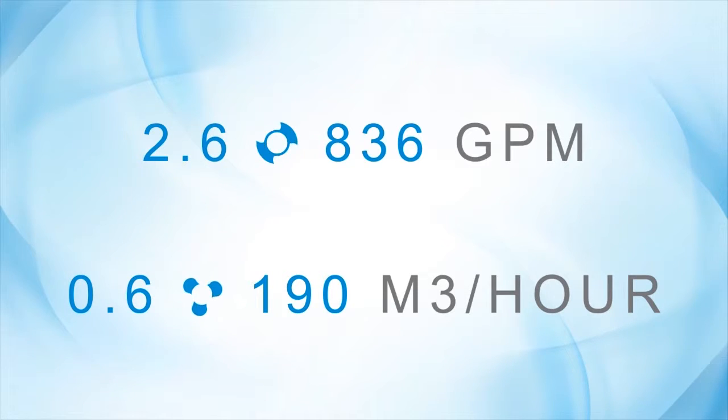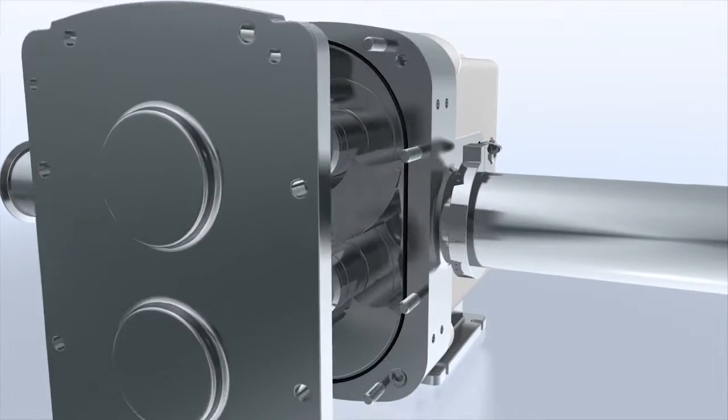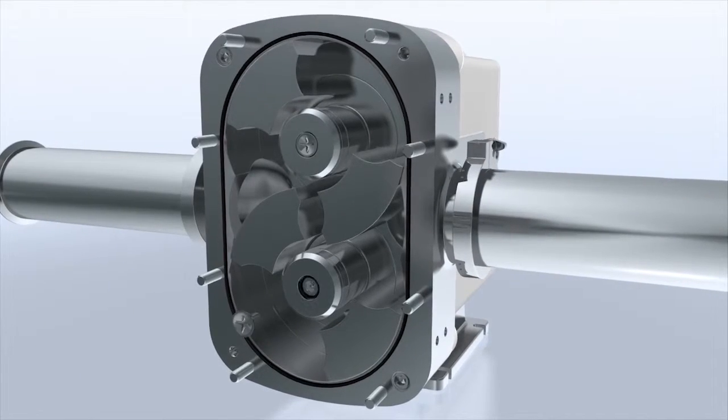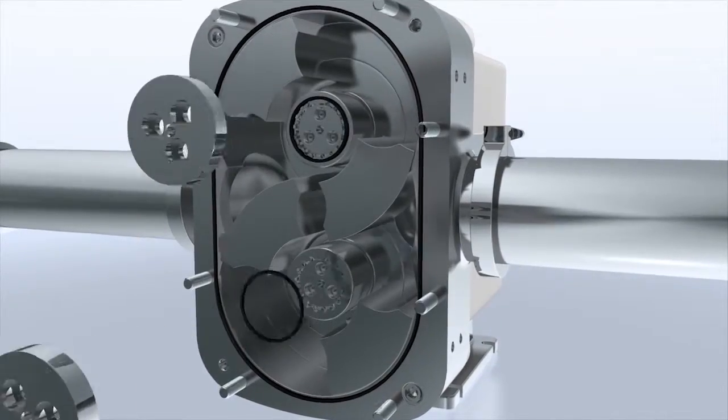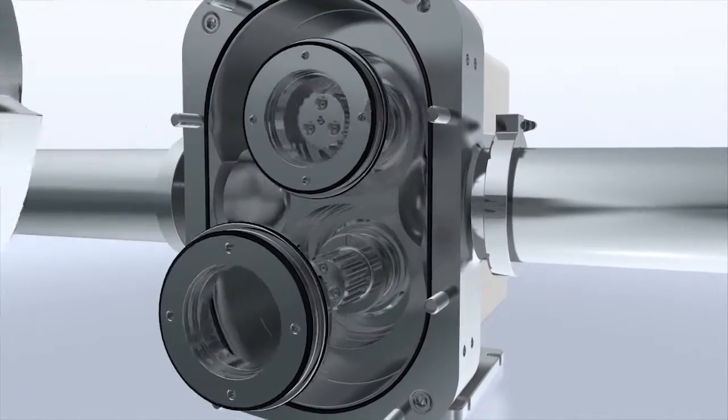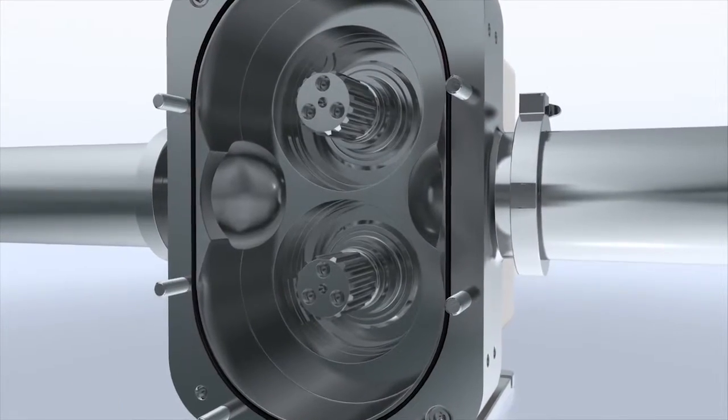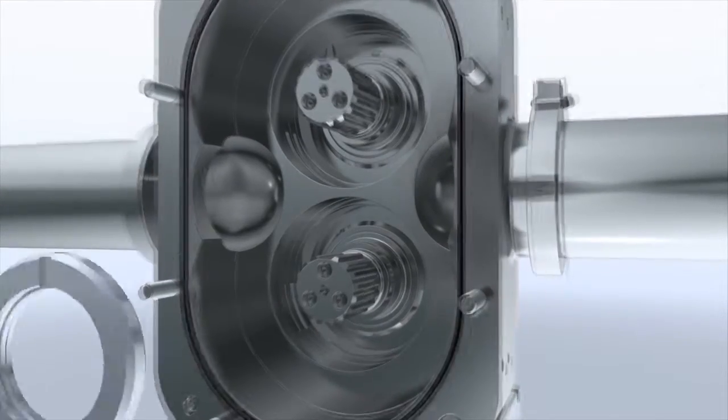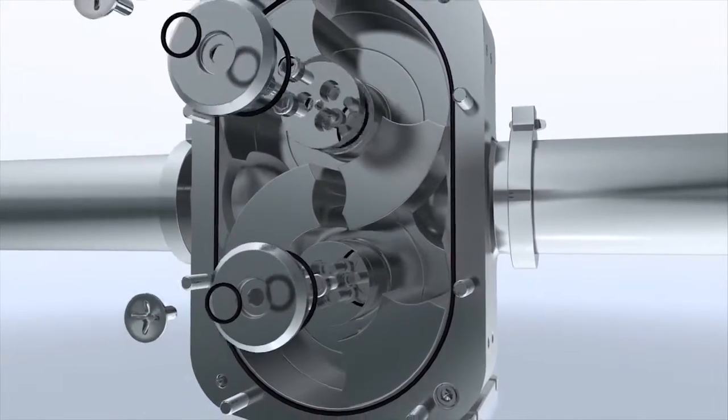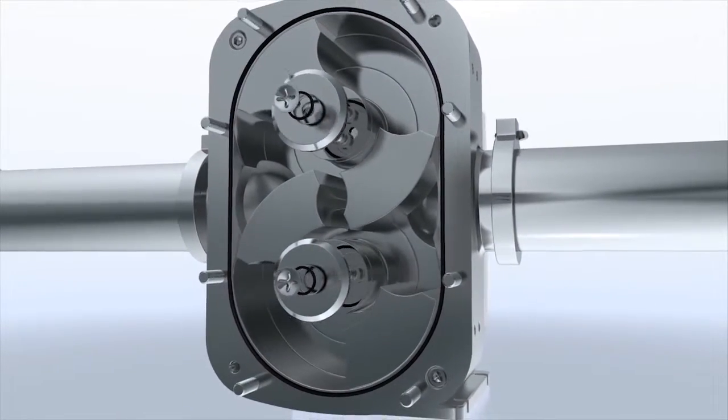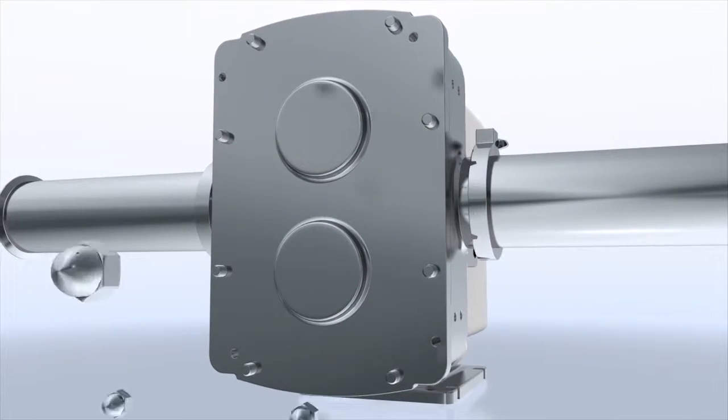For ease of maintenance and reduced pump downtime, the front loading seal design enables seal inspection and maintenance without disconnecting the pump from your process line. External shimming of the rotor's back and front face clearances can also be performed while the pump is in line, reducing further downtime.